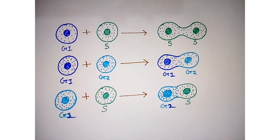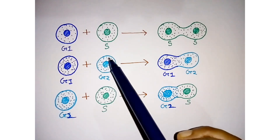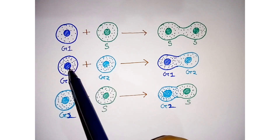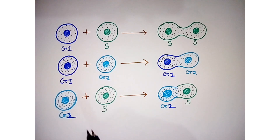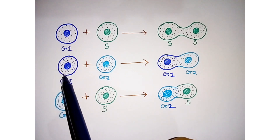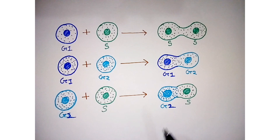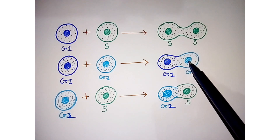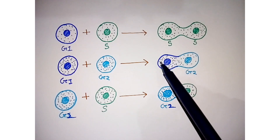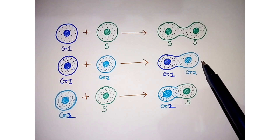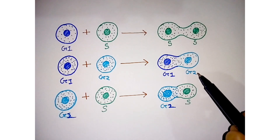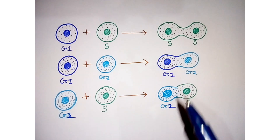There is an important difference to remember. When we fused G2 phase cells with G1 phase cells, we get both G1 and G2 remaining as they are — G2 is unable to induce any effect on G1. This is because G1 is earlier than G2 in the cell cycle, so G2 cannot drive G1 forward.